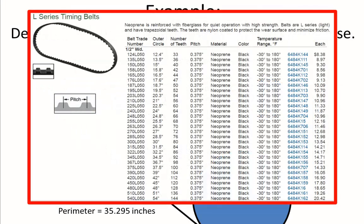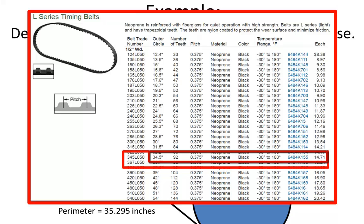I quickly went to the McMaster-Carr website to look at what size belts I could purchase. Looking at L series timing belts, I found that I could either purchase a 34.5-inch belt containing 92 teeth, or a 36.7-inch belt containing 98 teeth. I would probably pick the 34.5-inch belt that costs roughly $15, and I would have to live with the fact that my center distances would need to be a little closer together to accommodate this shorter belt, since a 35-inch or 35.5-inch belt just wasn't a commonly available size.